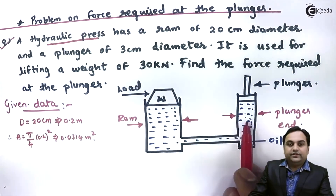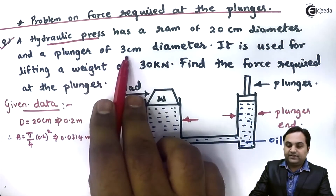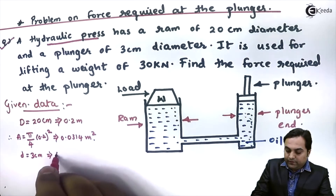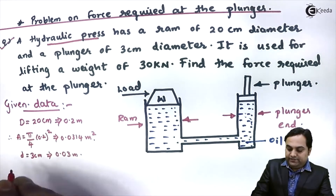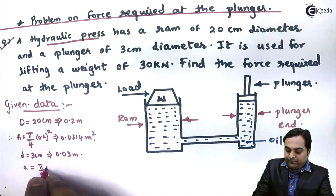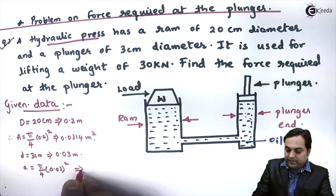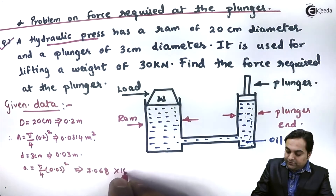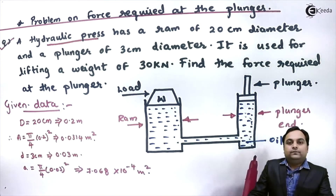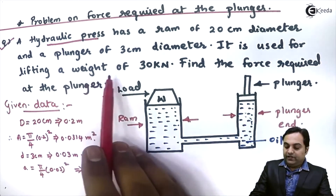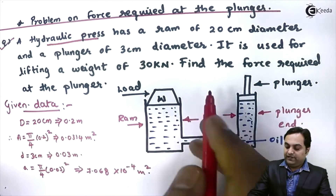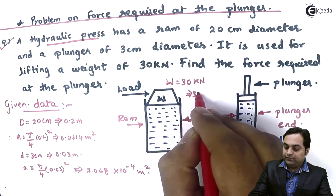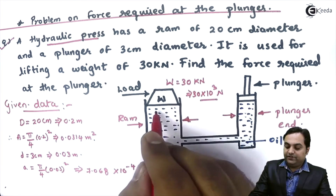Similarly, the diameter of the plunger is given as 3 centimeter, so small d = 3 cm = 0.03 m. Area of plunger: a = π/4 × (0.03)² = 7.068 × 10⁻⁴ m². The load to be lifted is 30 kilonewton, so W = 30 × 10³ N, which is the weight lifted at the ram end.